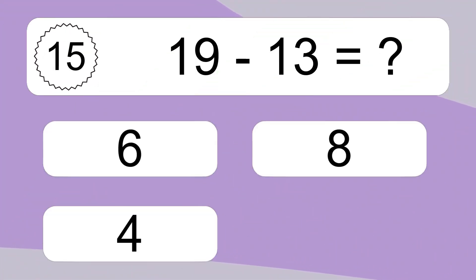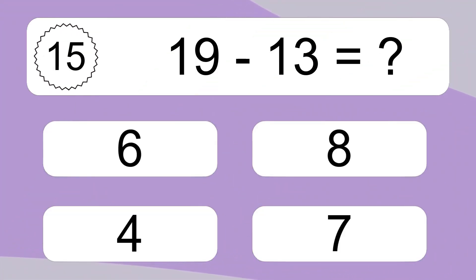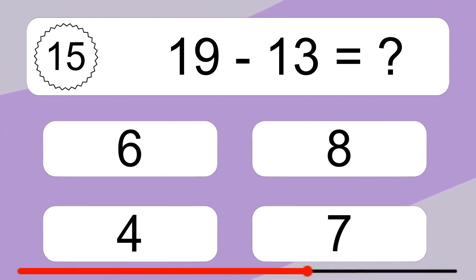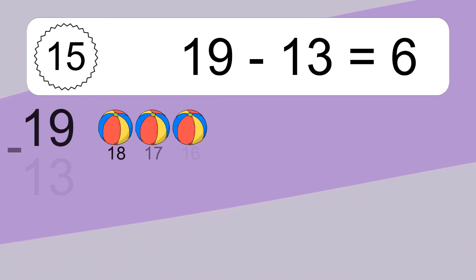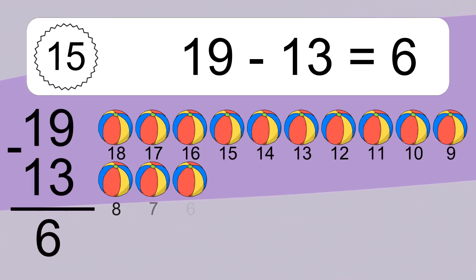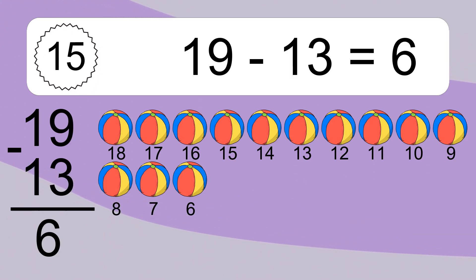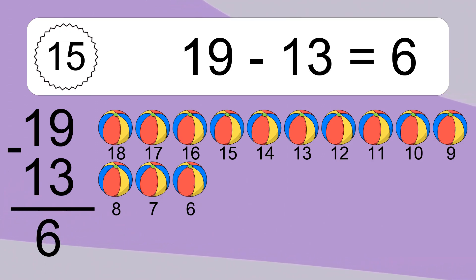19 minus 13 equals what? 19 minus 13 equals 6. Let's count it: 18, 17, 16, 15, 14, 13, 12, 11, 10, 9, 8, 7, 6.